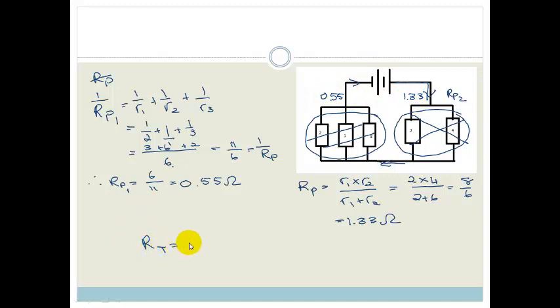So our total resistance is going to be this 0.55 ohms from this resistor over here, this one here, plus 1.33 ohms from this resistor over here, which means that the total resistance in this circuit is going to be 1.88 ohms.